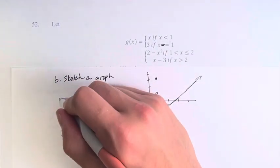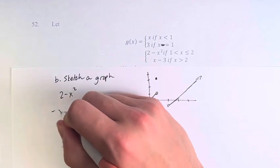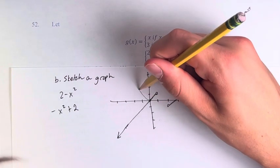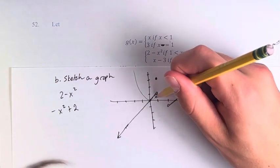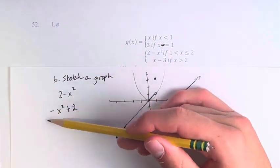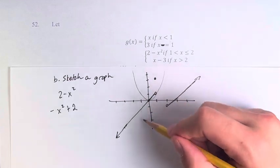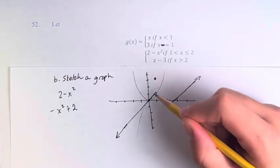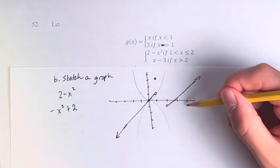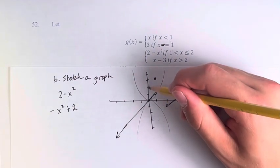And then in between here we have 2 minus x squared, which is negative x squared plus 2. So this is going to take a couple extra steps. We have the general quadratic function right here. With the negative out front, that means we have to reflect it over the y-axis—sorry, over the x-axis. And then the plus 2 means we have to move it up 2 units.